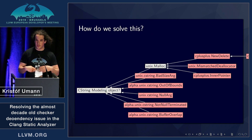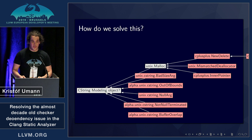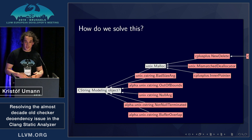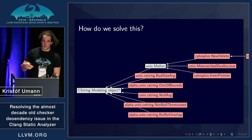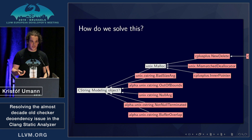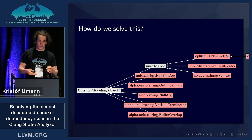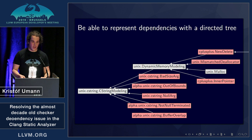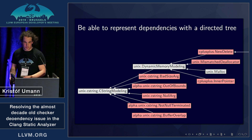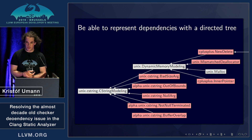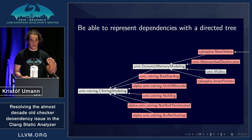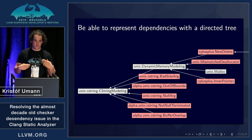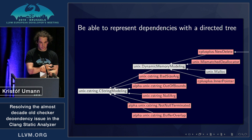How do we solve this issue? How do we re-implement checker dependencies? Inner pointer doesn't actually depend on malloc directly — it depends on some sort of dynamic memory allocation that malloc checker implements. In order to solve this, we have to find a correct representation by dividing checkers up. We divided malloc checker into a modeling portion and a reporting portion, and did further checker split-ups to have a clear and precise directed tree that represents checker dependencies.